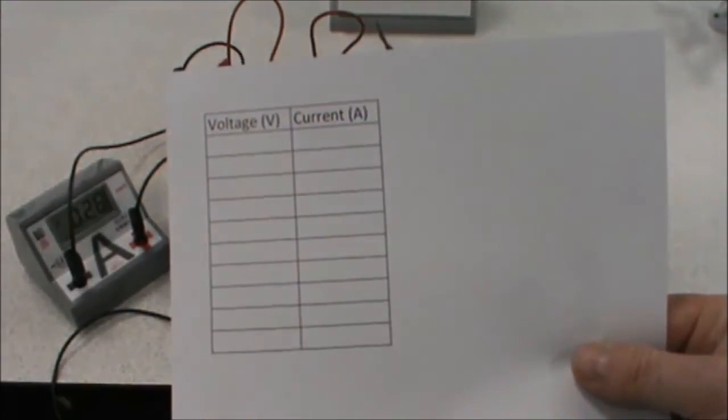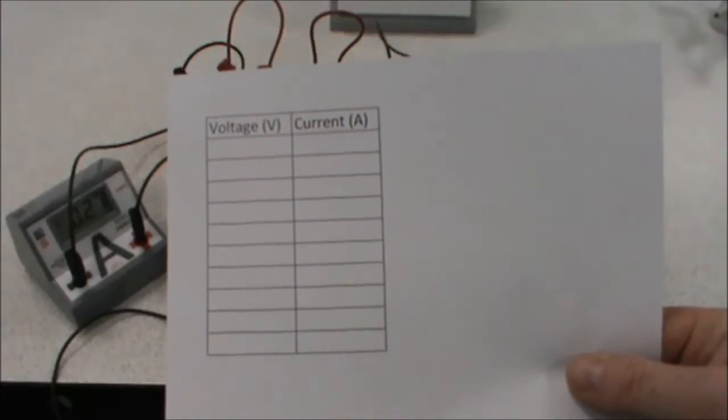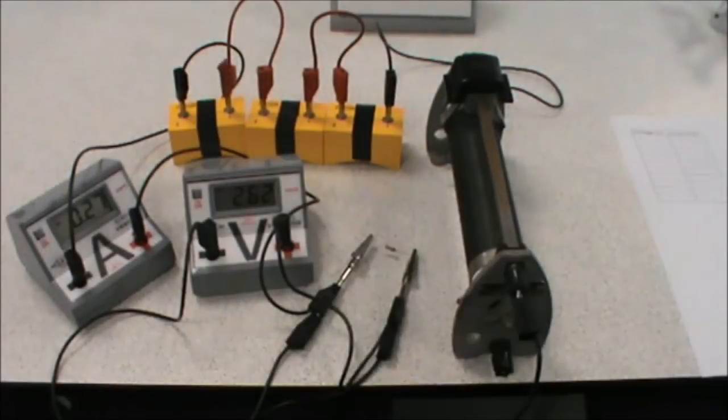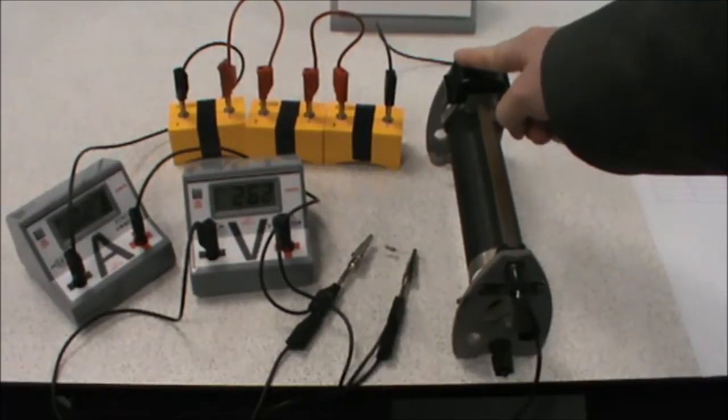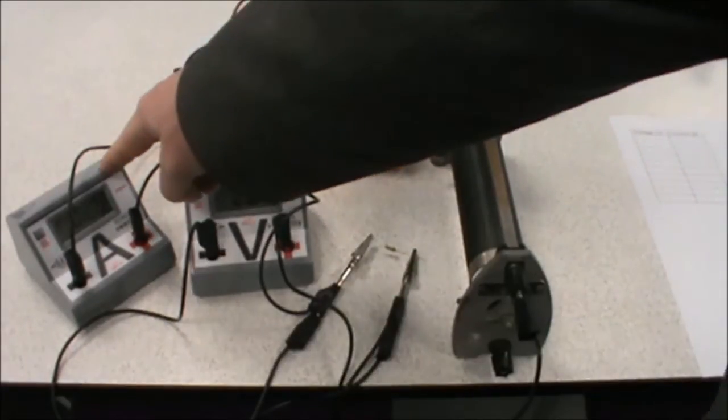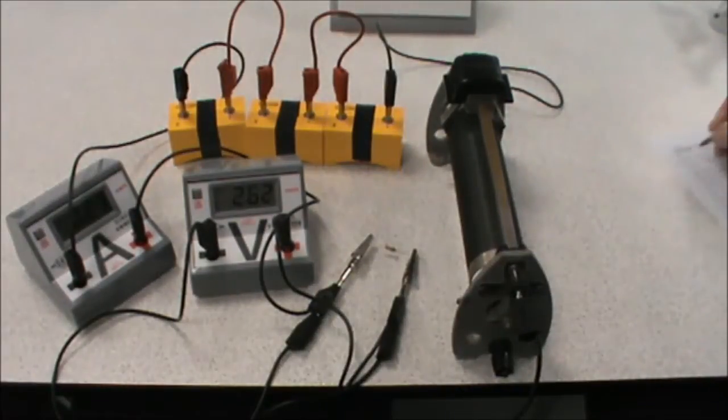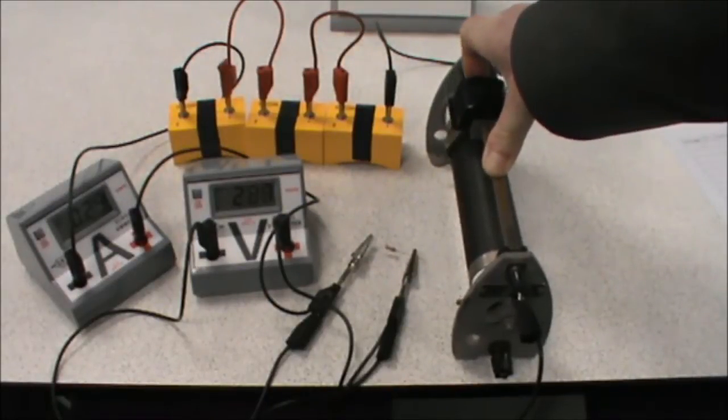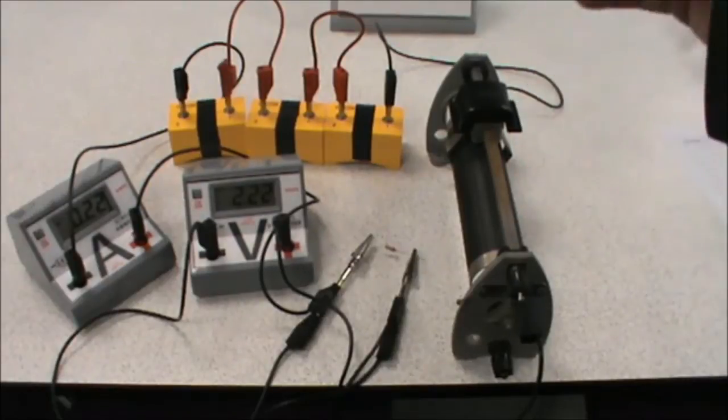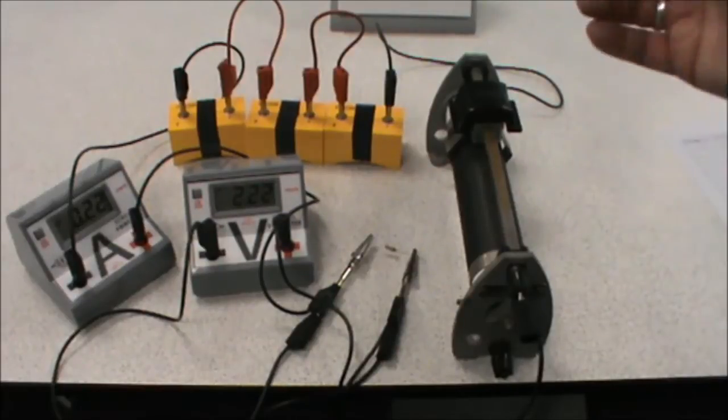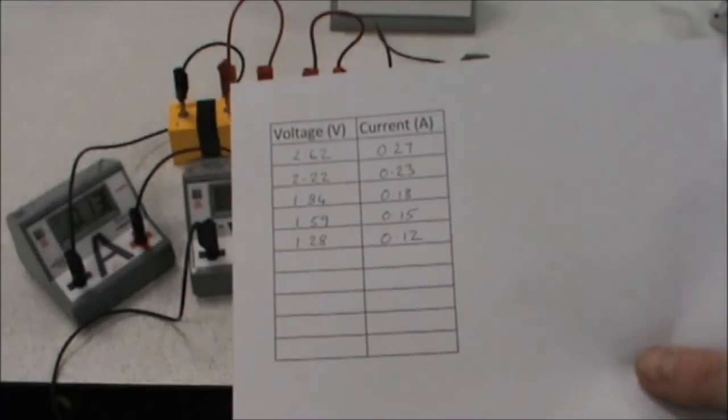We're going to start off by recording our voltage and current readings in a table like this, also downloadable from my webshop. Our first voltage and current reading: we've got our variable resistor set right to one end. We have a voltage of 2.62 volts and a current of 0.27. We're going to adjust the resistor to give us other readings. We don't want to go too far because we want to get a range of around 10 readings, some positive and some negative. So there's our first set of data.